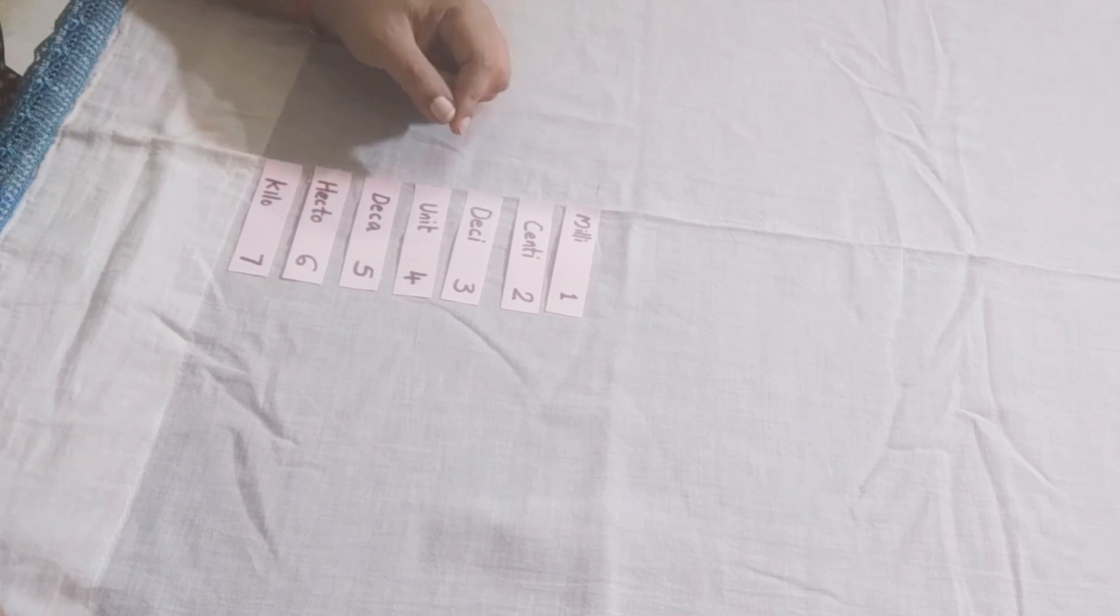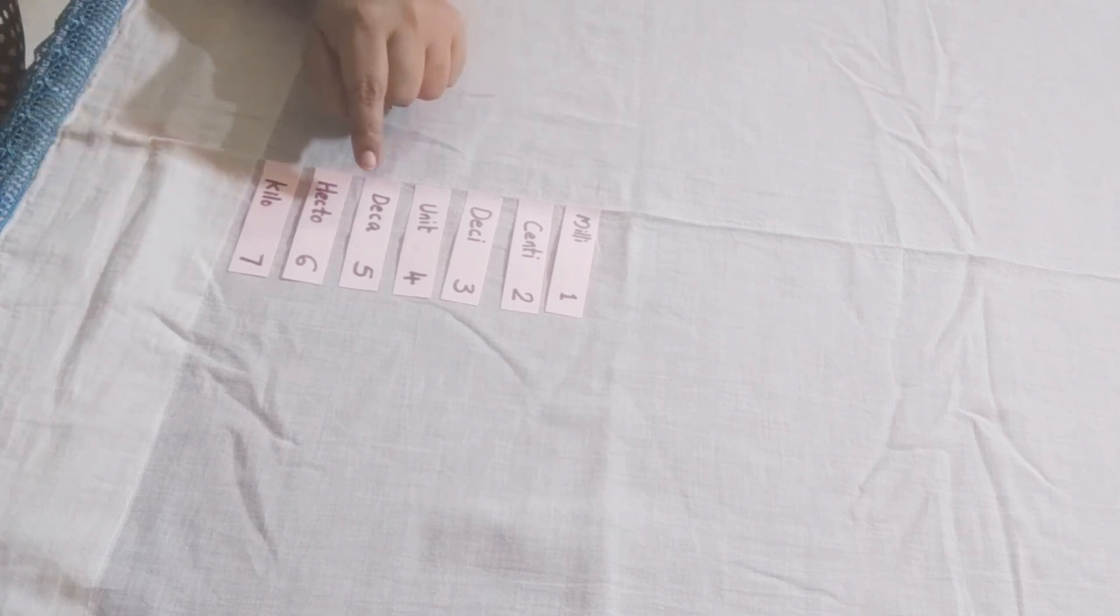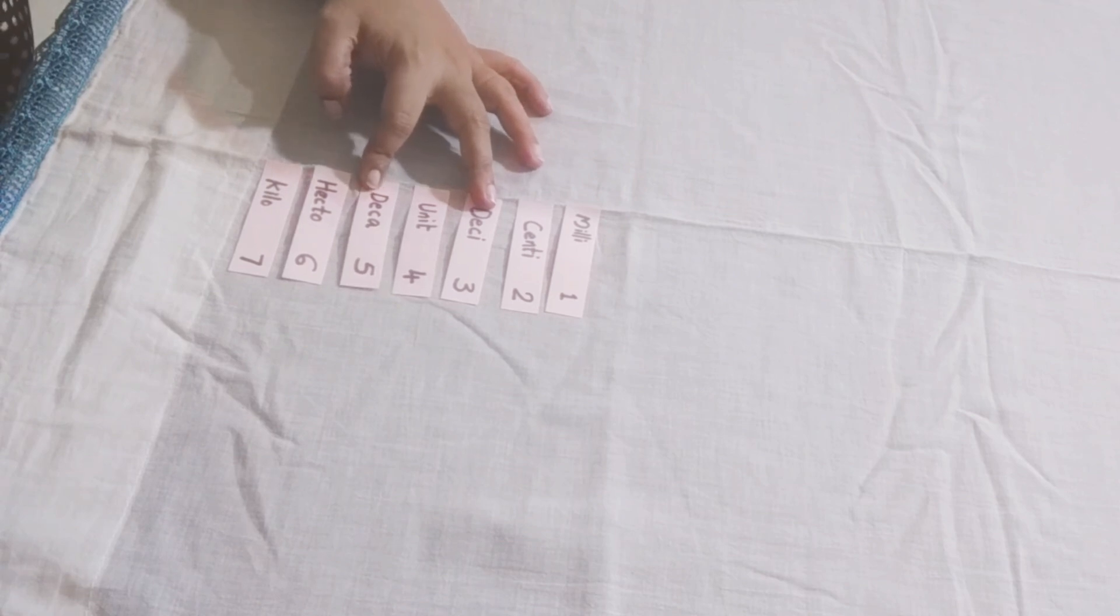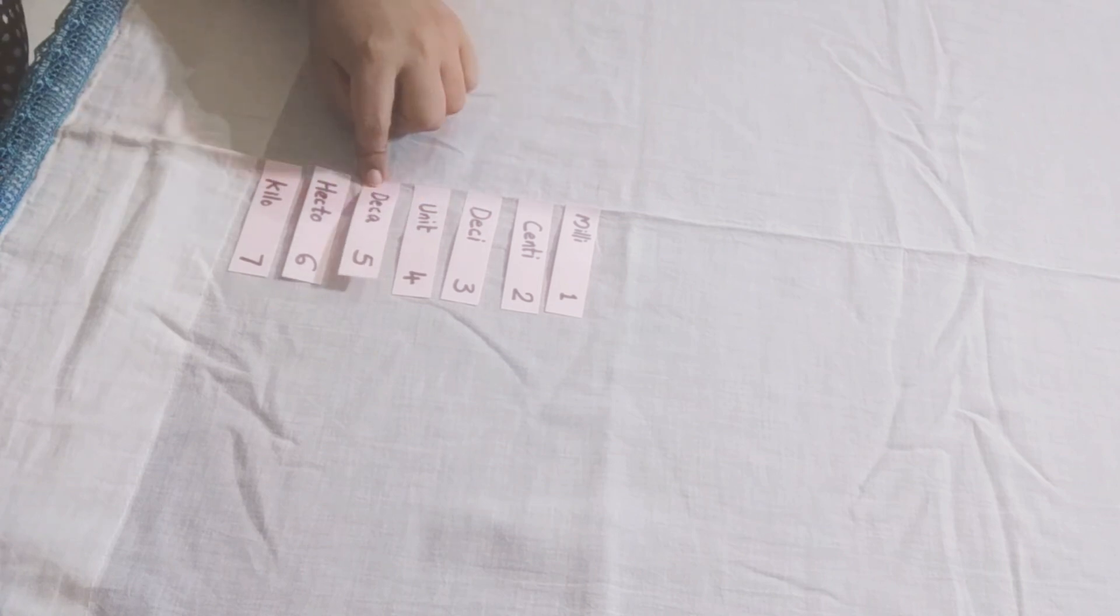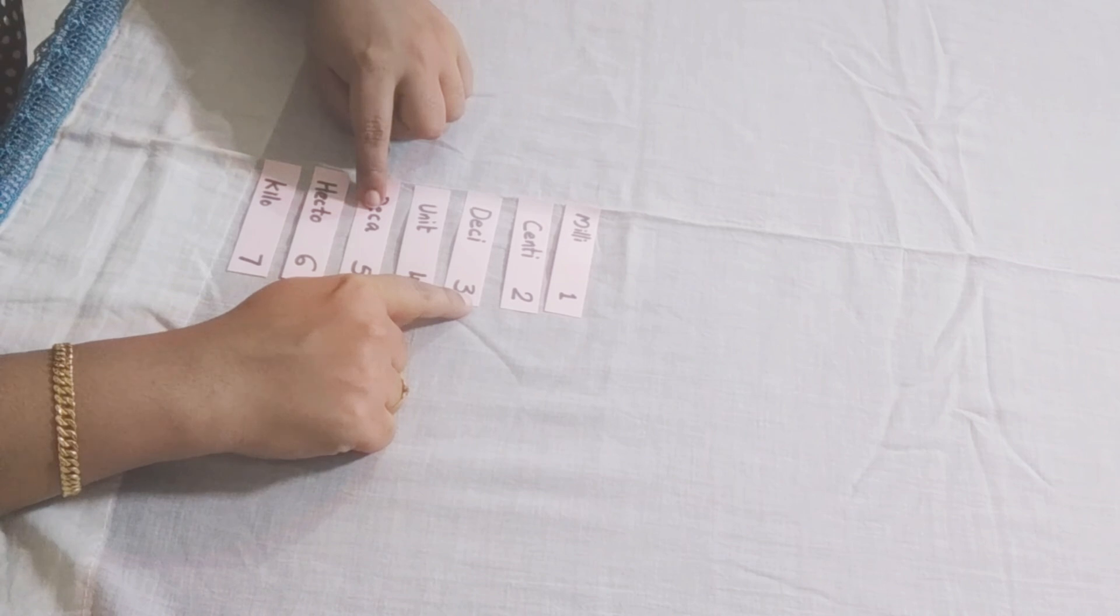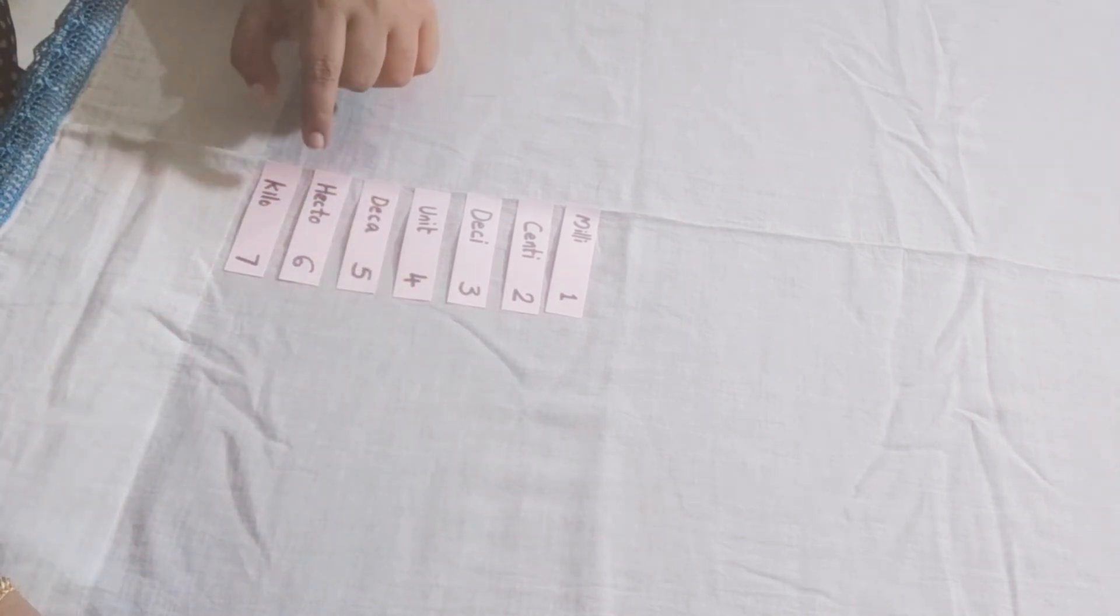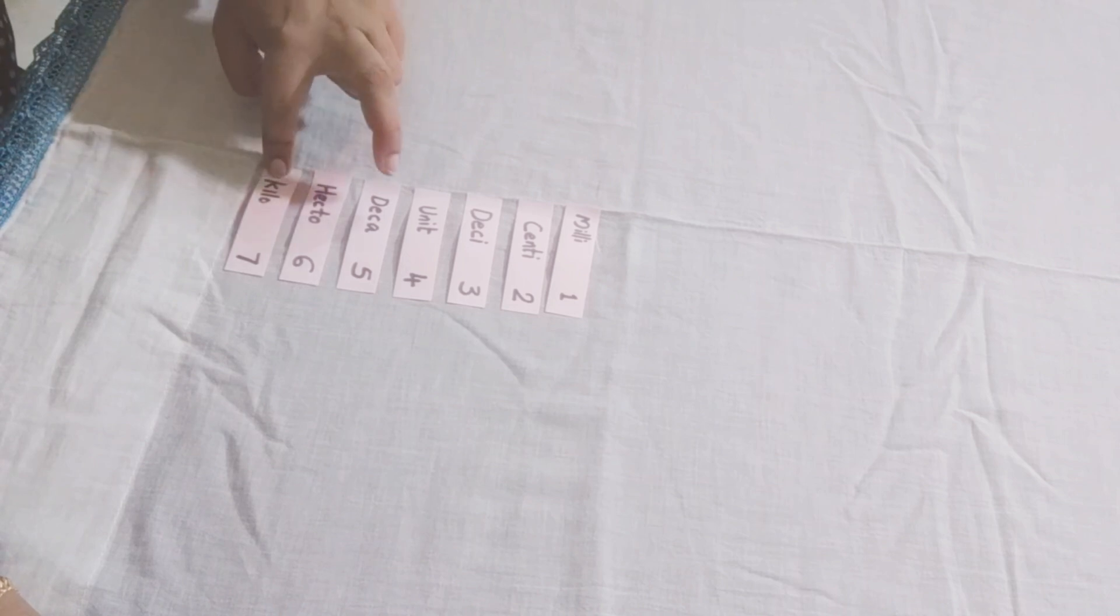Now let's try to do this without beans. So if you want to convert decameters to decimeters, what would you do? You will have to add two zeros to that number, because five minus three is two, and you multiply that number with a number which has two zeros.